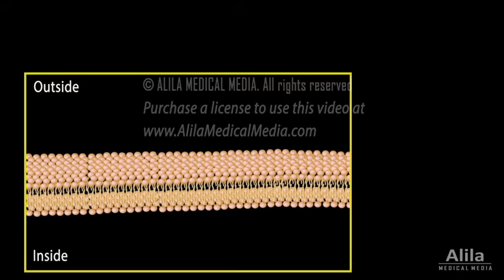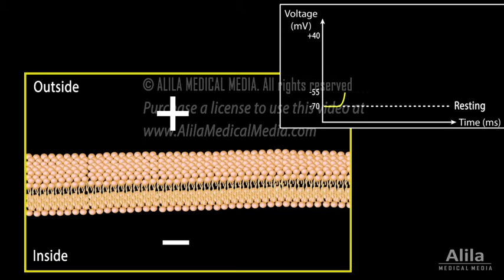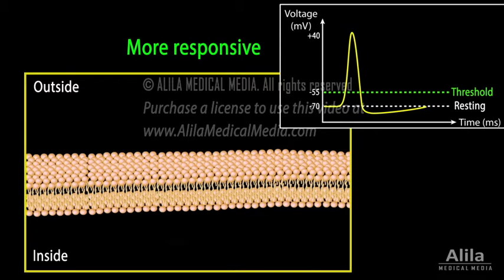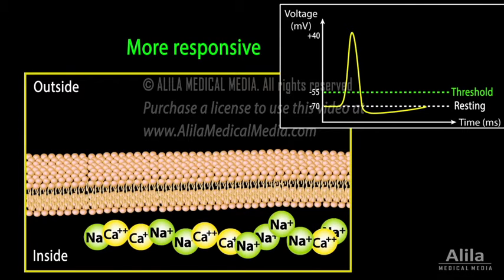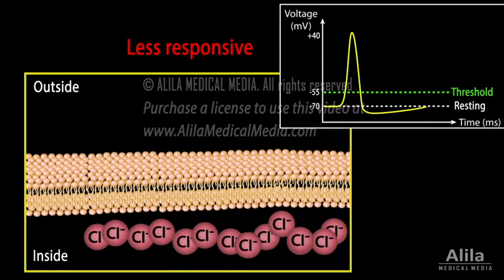Responsiveness or excitability of a neuron is determined by the value of electrical voltage across its membrane. The closer it is to the activation threshold, the more likely it is to fire. Basically, a neuron is more responsive when it has more positive charges on the inside and is less responsive when it becomes more negative.